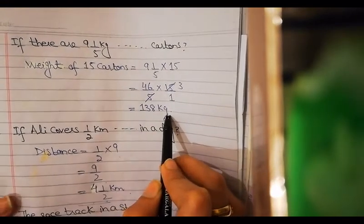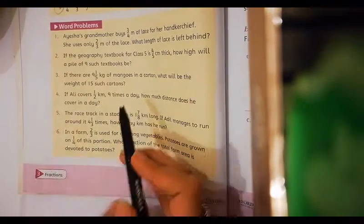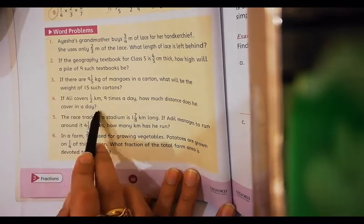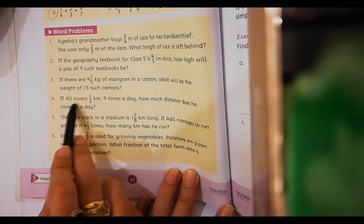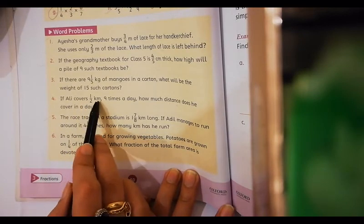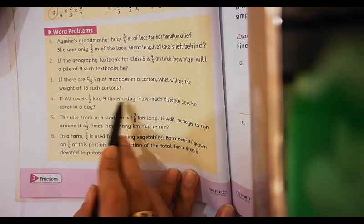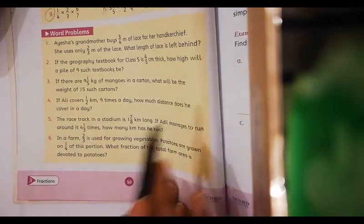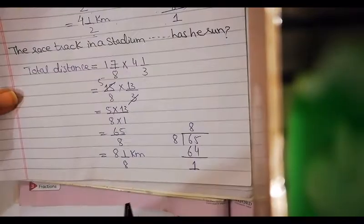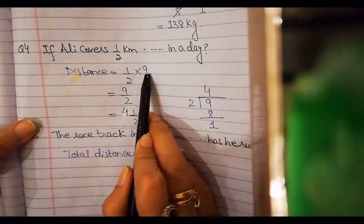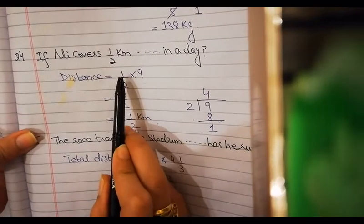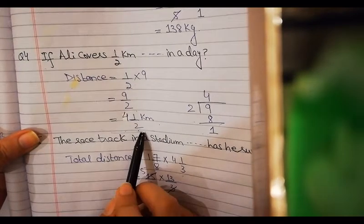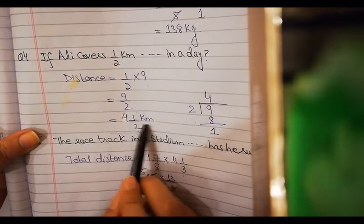Question number 4: if Ali covers 1/2 km, 9 times a day, how much distance does he cover in a day? The total distance that Ali has covered is 1/2 km, 9 times a day. I will find out the total distance he covers. Simply, you have to multiply your distance, 1/2 multiplied by 9, which equals 9/2. After division, you have to convert it to mixed form. 4 whole 1/2 km is your answer.